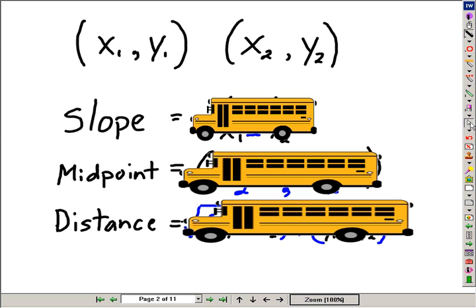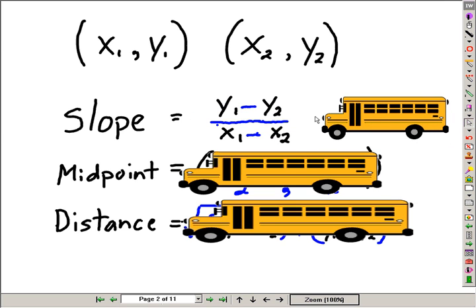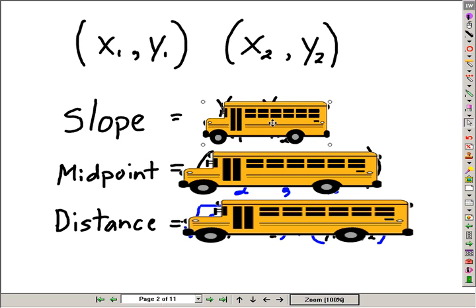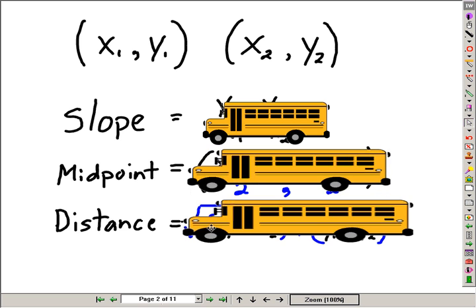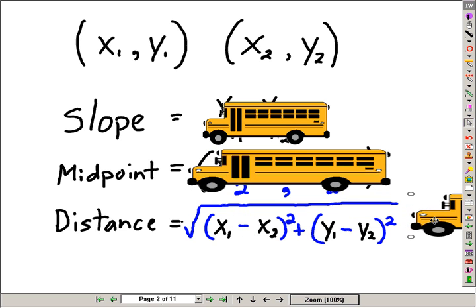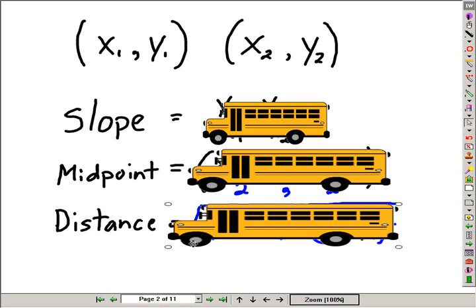The first formula, the slope formula. Difference of y's divided by difference of x's. The midpoint formula. The average of the x's, the average of the y's, and the distance formula, that ridiculous mess. Actually, based on the Pythagorean Theorem, which we learn about another day.